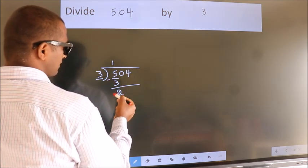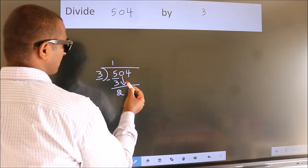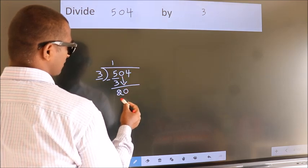After this, bring down the beside number. So, 0 down. So, 20.